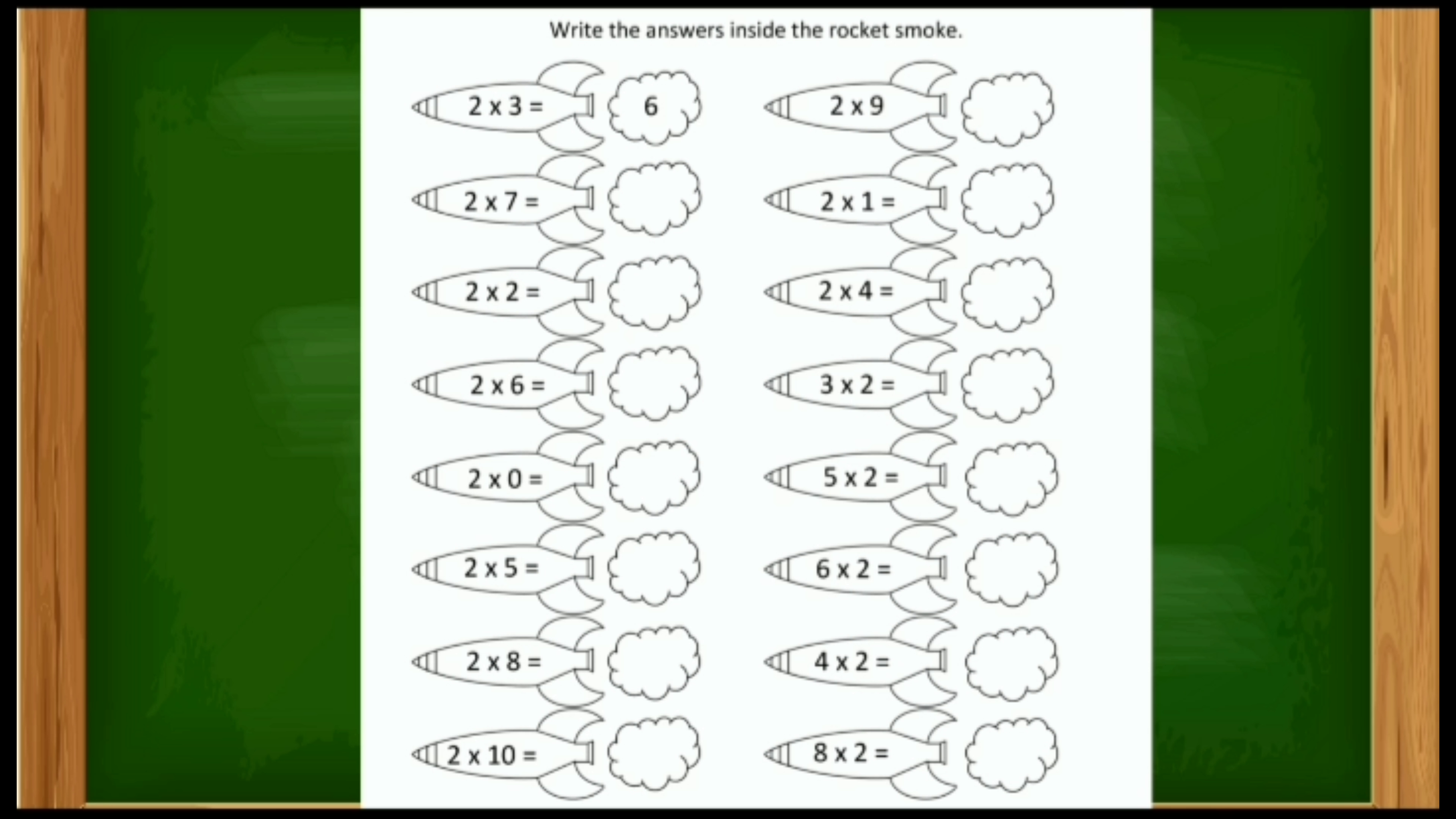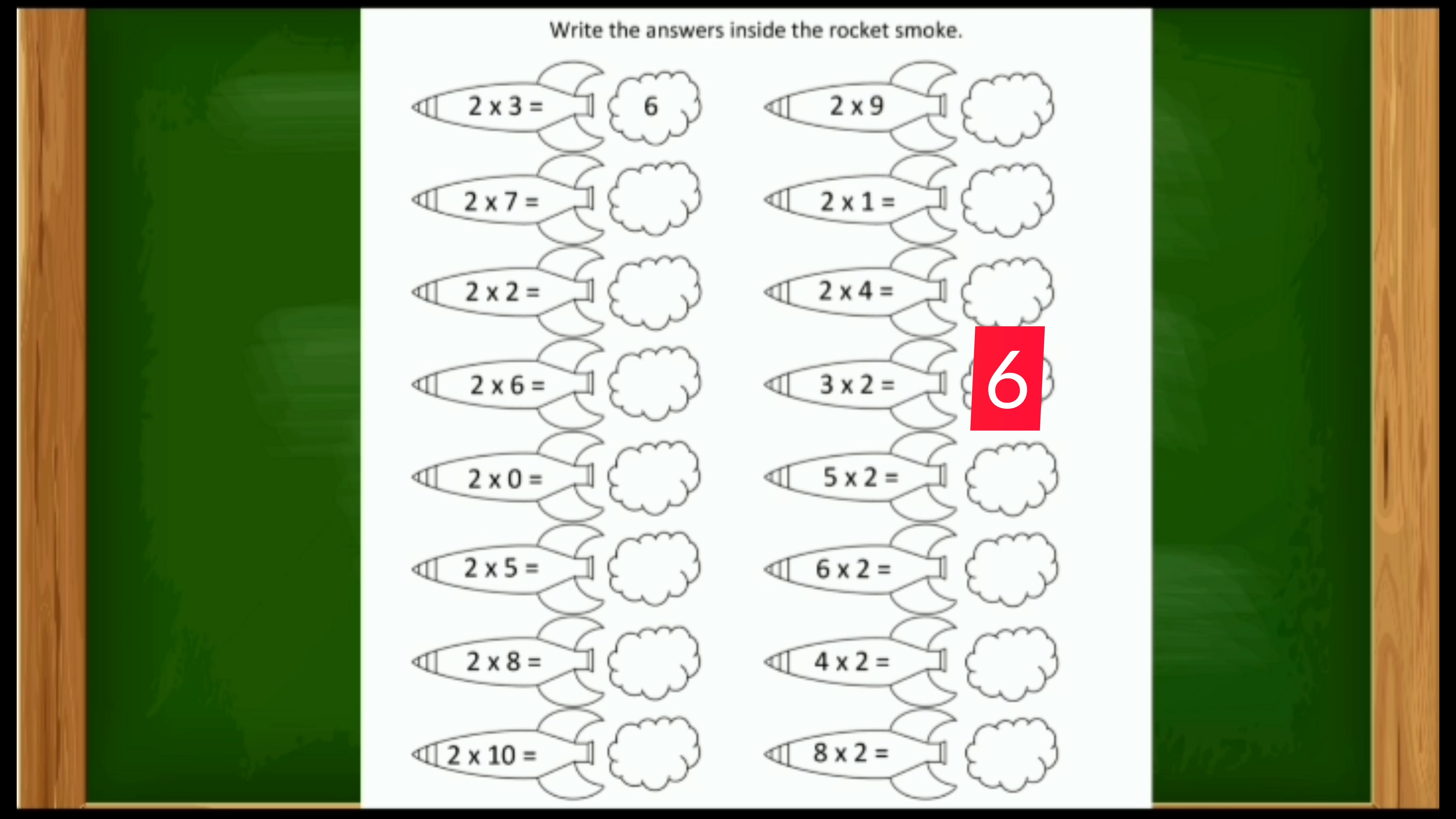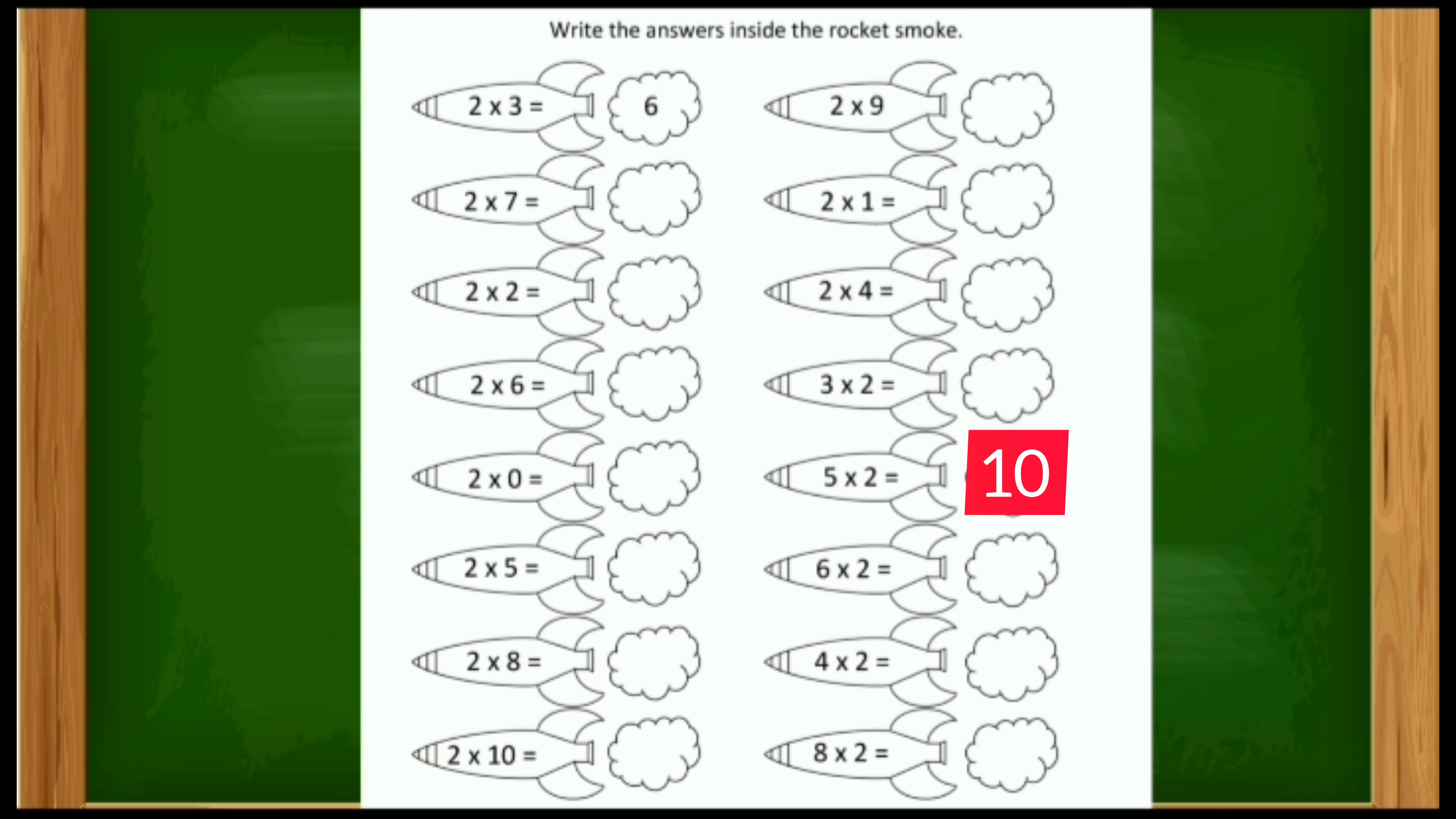Two fours are eight. Three twos are, oh no! We learned two table. Here it's written three twos are. So don't worry. Three twos are equals two threes are. So two threes are six. Now coming to five twos are. Five twos are means two fives are. So two fives are ten.